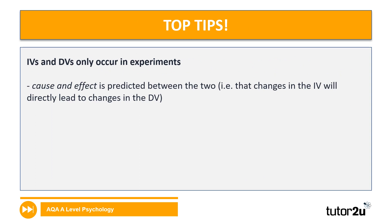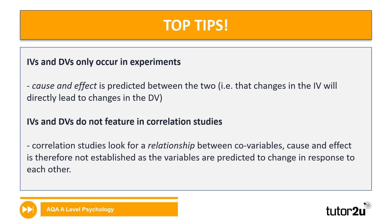A couple of top tips about the independent and dependent variable. When we use the language of IV and DV, we're only talking about experimental research. The point of experimental research is to predict cause-and-effect relationships — if I change the IV, something is going to happen to the DV. Secondly, and this really does trip students up: IVs and DVs do not occur in correlational studies. In correlational research, we look for relationships between co-variables, not an IV and a DV — which is why a disadvantage of correlational research is that it only identifies relationships, not cause and effect.